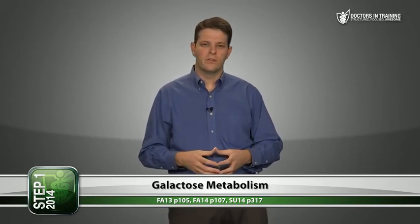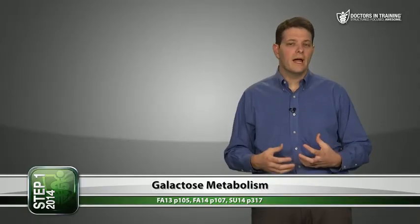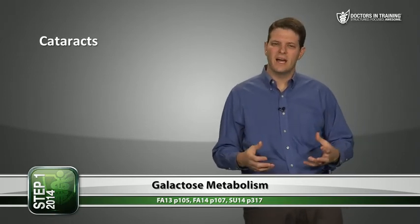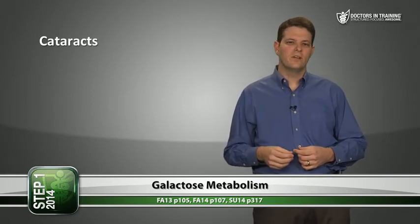Galactose is another monomer sugar the body can use. Two important disorders of galactose metabolism: First, galactokinase deficiency causes accumulation of galactitol in blood and urine — similar to how fructose accumulates in essential fructosuria. Because galactose accumulates, it can lead to infantile cataracts, as the lens of the eye is particularly sensitive to sugar accumulation — similar to what we see in diabetes.